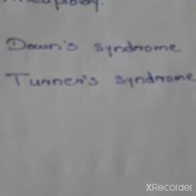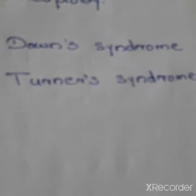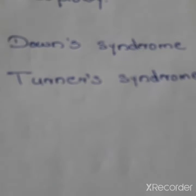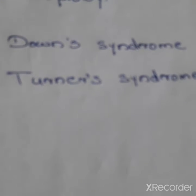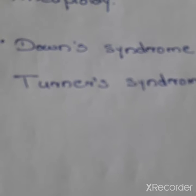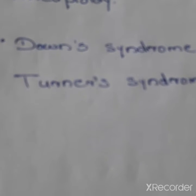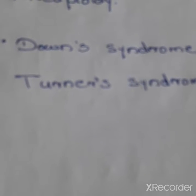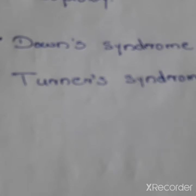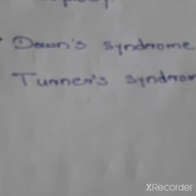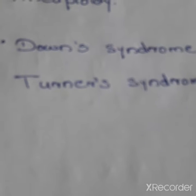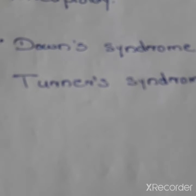Down syndrome results in the gain of an extra copy of chromosome 21. Turner syndrome results due to the loss of an X chromosome in human females.